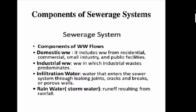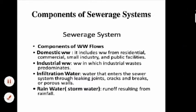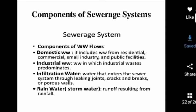The second type is industrial wastewater — wastewater in which industrial waste predominates, obtained from all larger industries. The third type is infiltration water: water that enters the sewer system through joints, cracks, or porous walls.